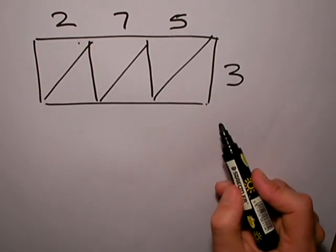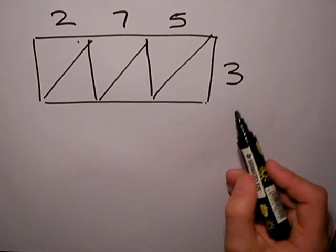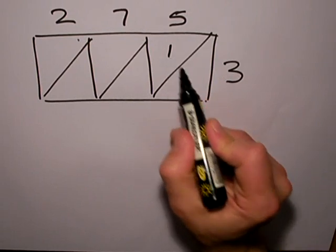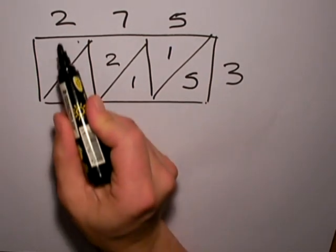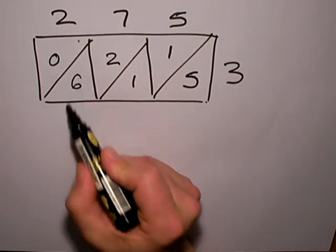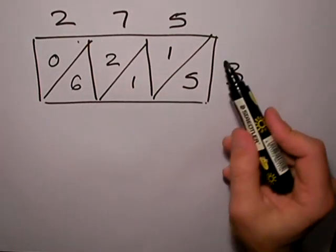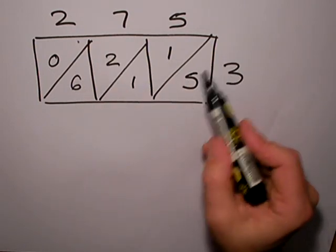Simply, all I do is multiply each pair of numbers and put the answers in the boxes. So 3 times 5 is 15, 3 times 7 is 21, and 3 times 2 is 6. Now I use the diagonal lines to add up.